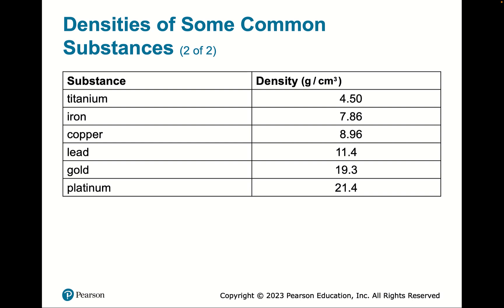Looking at other densities: titanium (4.5 g/cm³) is strong and used in fighter jets; iron and copper are denser; lead, gold, and platinum are even denser. The most dense elements are osmium or iridium — ruthenium is the theoretical limit but hasn't been observed. It depends on temperature and pressure which you consider to be the most dense.